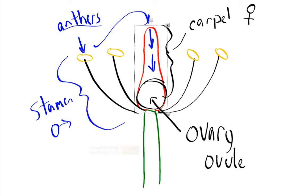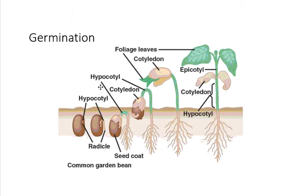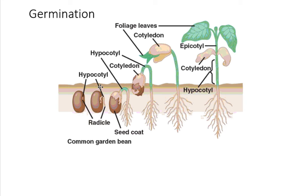Lastly, you have the seed that falls onto the ground. What it does is called germination, which is just the growing of this new seed into a sporophyte.